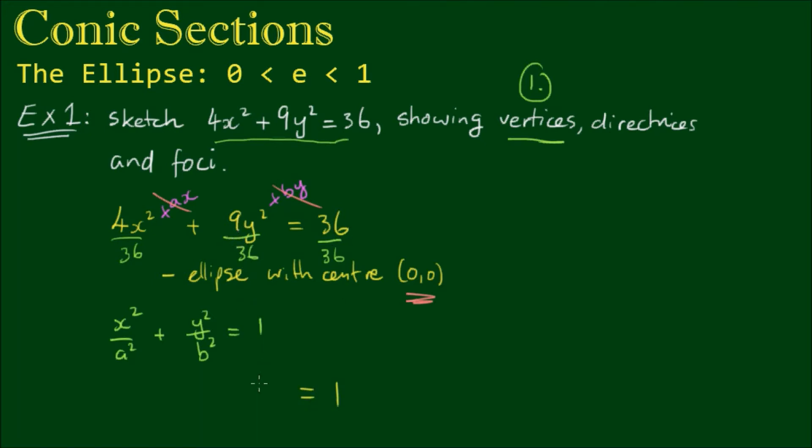9 over 36 cancels down to 1/4, so we have y² on 4. And 4 over 36 cancels down to 1/9, so we have x² on 9.